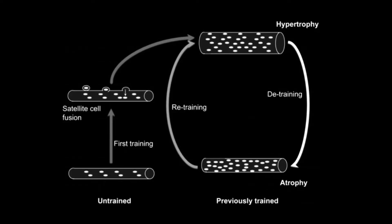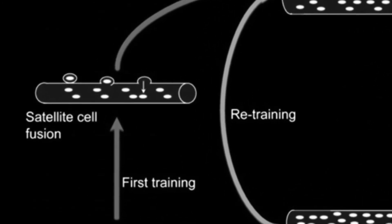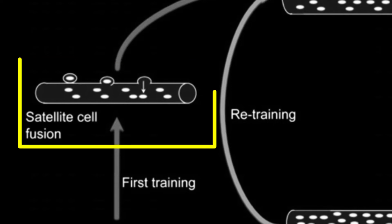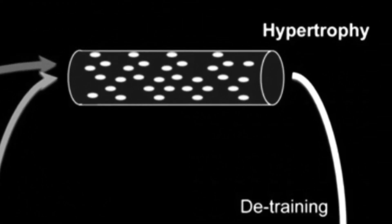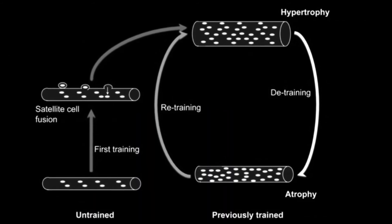When a satellite cell divides through mitosis, the new cells increase the number of myonuclei in your muscles. This is hypertrophy — resulting in muscle gain. The second part of the model is that you build an adequate number of myonuclei through training.